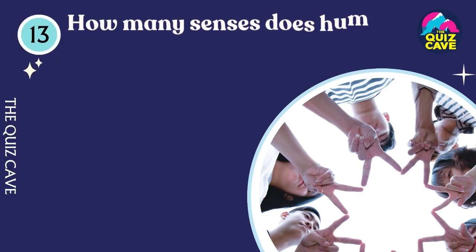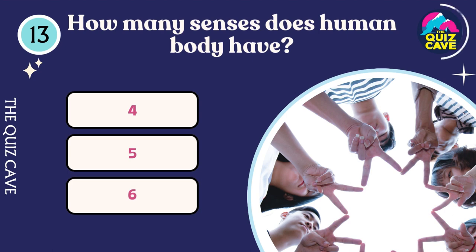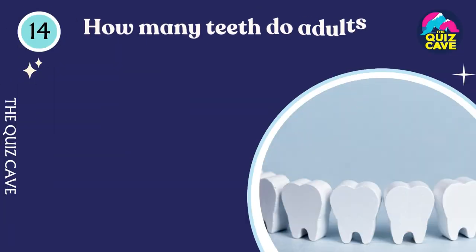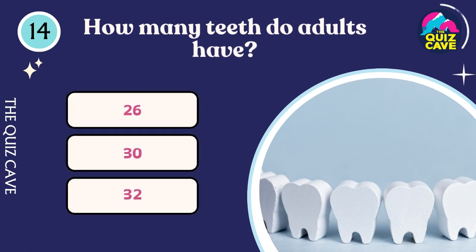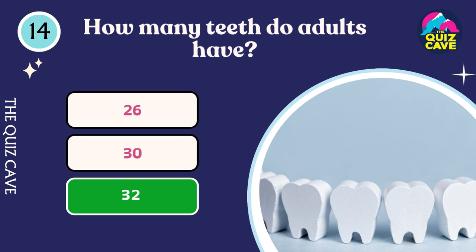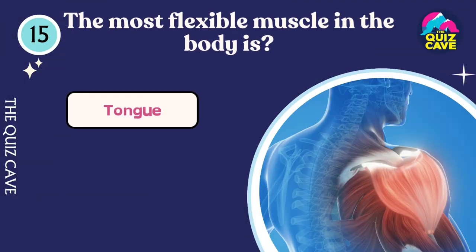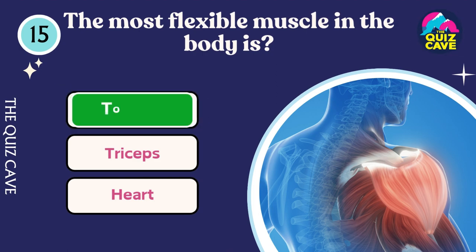How many senses does human have? Five. The most flexible muscle in human body is the tongue.